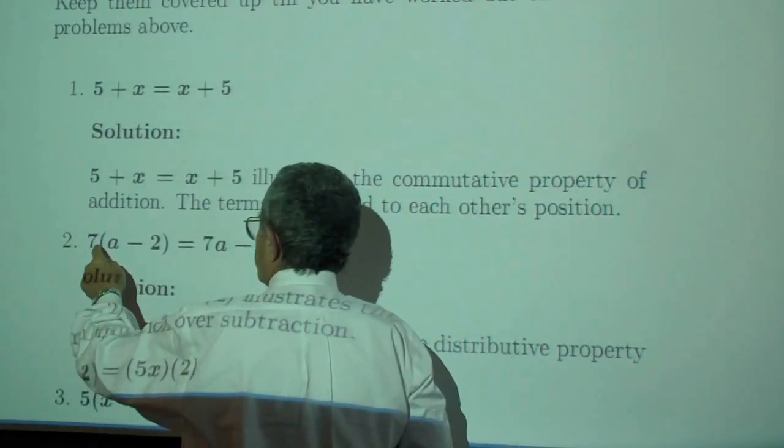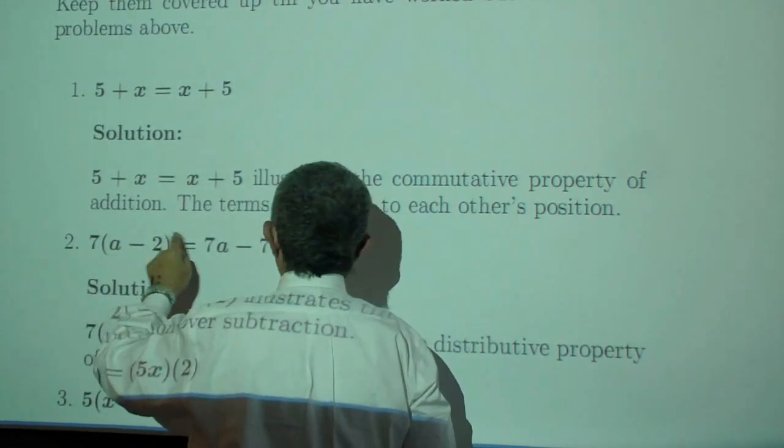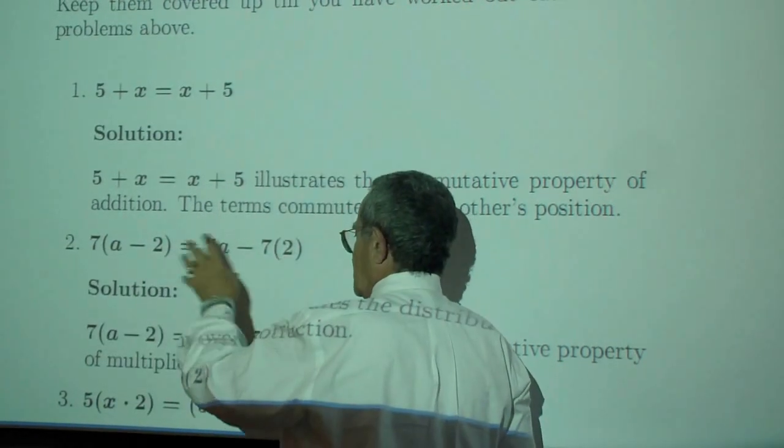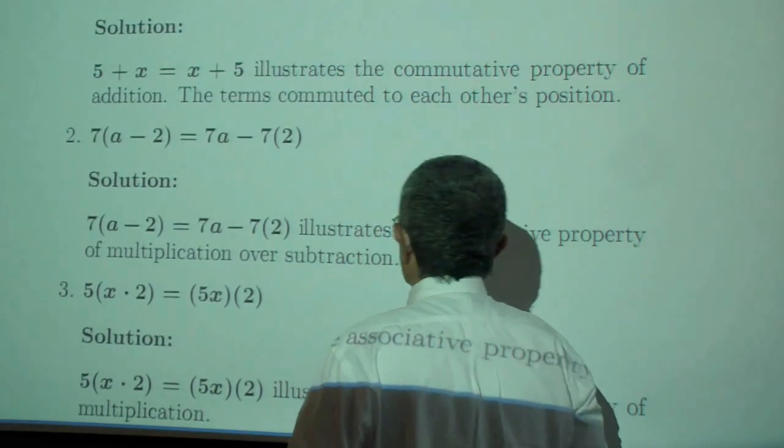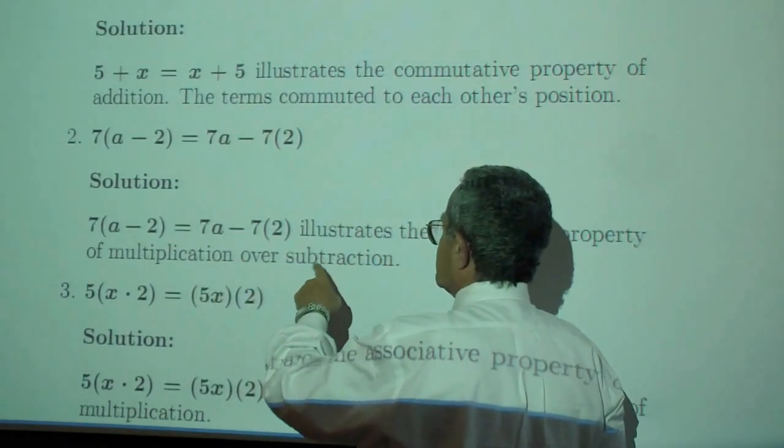We have minus, which is reproduced. We draw an arrow, we get 7a. We draw an arrow, we get seven times two. We have distributed multiplication over subtraction.